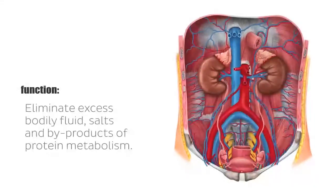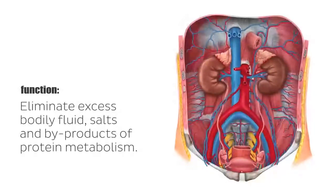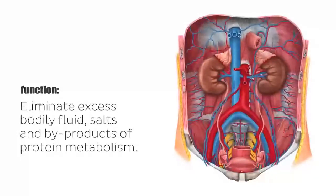Their main function is to eliminate excess bodily fluid, salts, and byproducts of protein metabolism. And as you can see they have this bean shape — they are what we also call bean-shaped organs — which receive blood supply from the renal arteries, the topic of this tutorial. And these arteries are branches of this main artery here, this blood vessel.